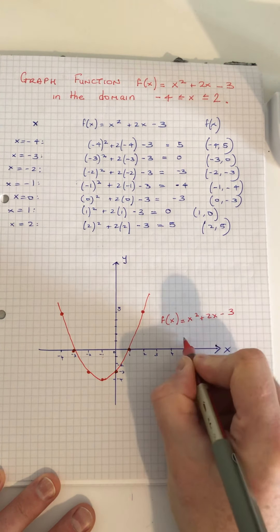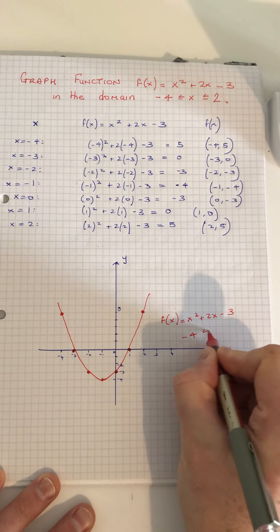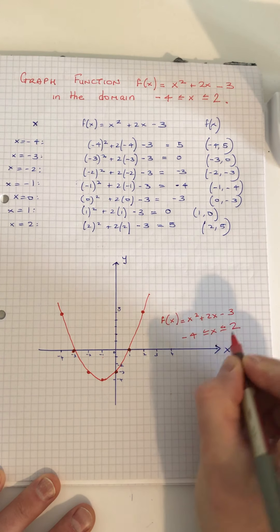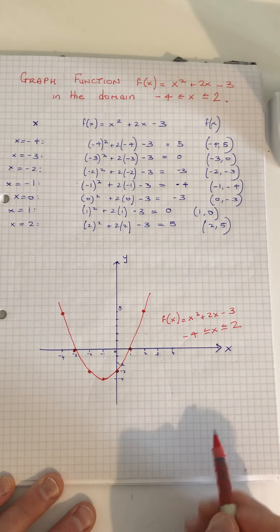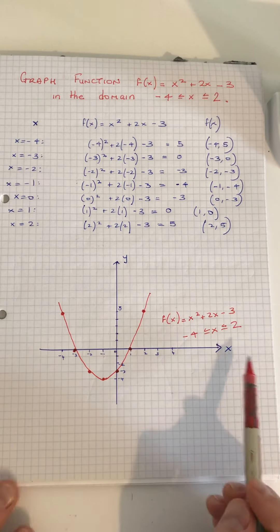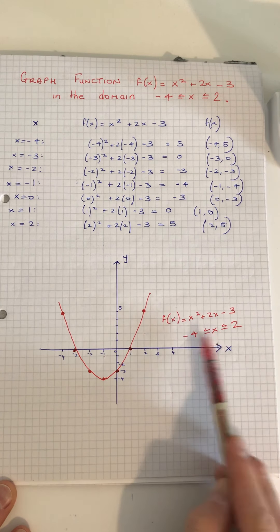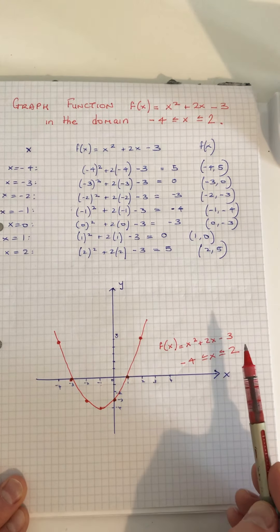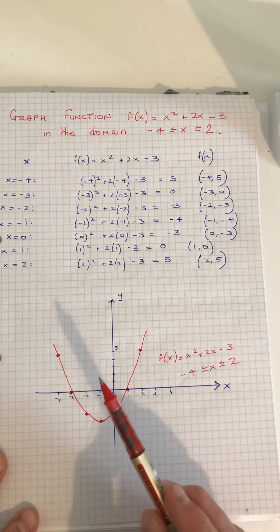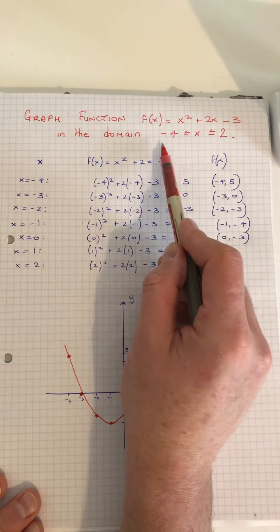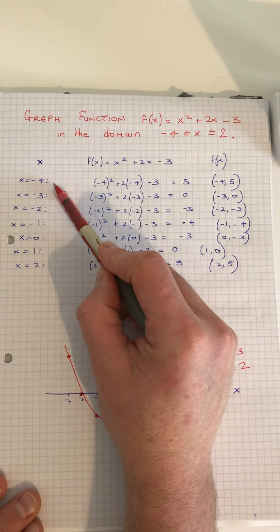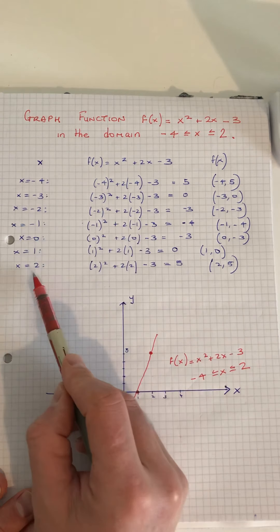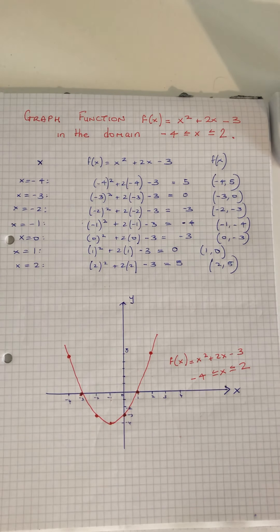And that's your graph f(x) = x² + 2x - 3 between minus 4 and 2. We always label our graph with our x and y and we give the graph a title. We start at minus 4 and end at 2 — that's question number 6.